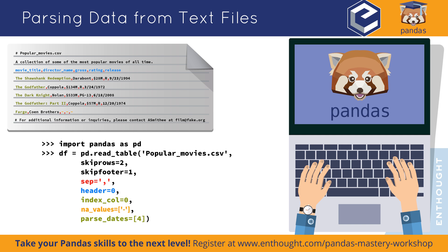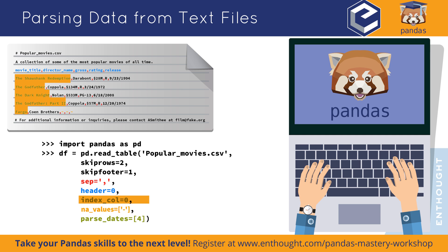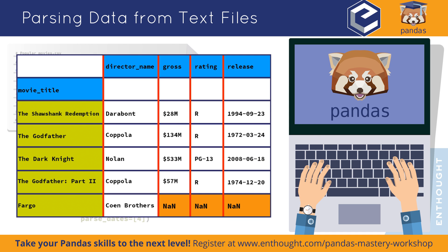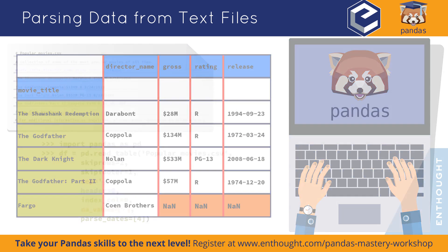In the function parameters, I simply specify how many rows of header and footer to skip, what character to use as the data separator, what row contains the column names, which column contains the row IDs, what character indicates missing values, how to parse dates, and more. The function takes care of parsing the content and returning a data frame containing all the data organized just the way I want.